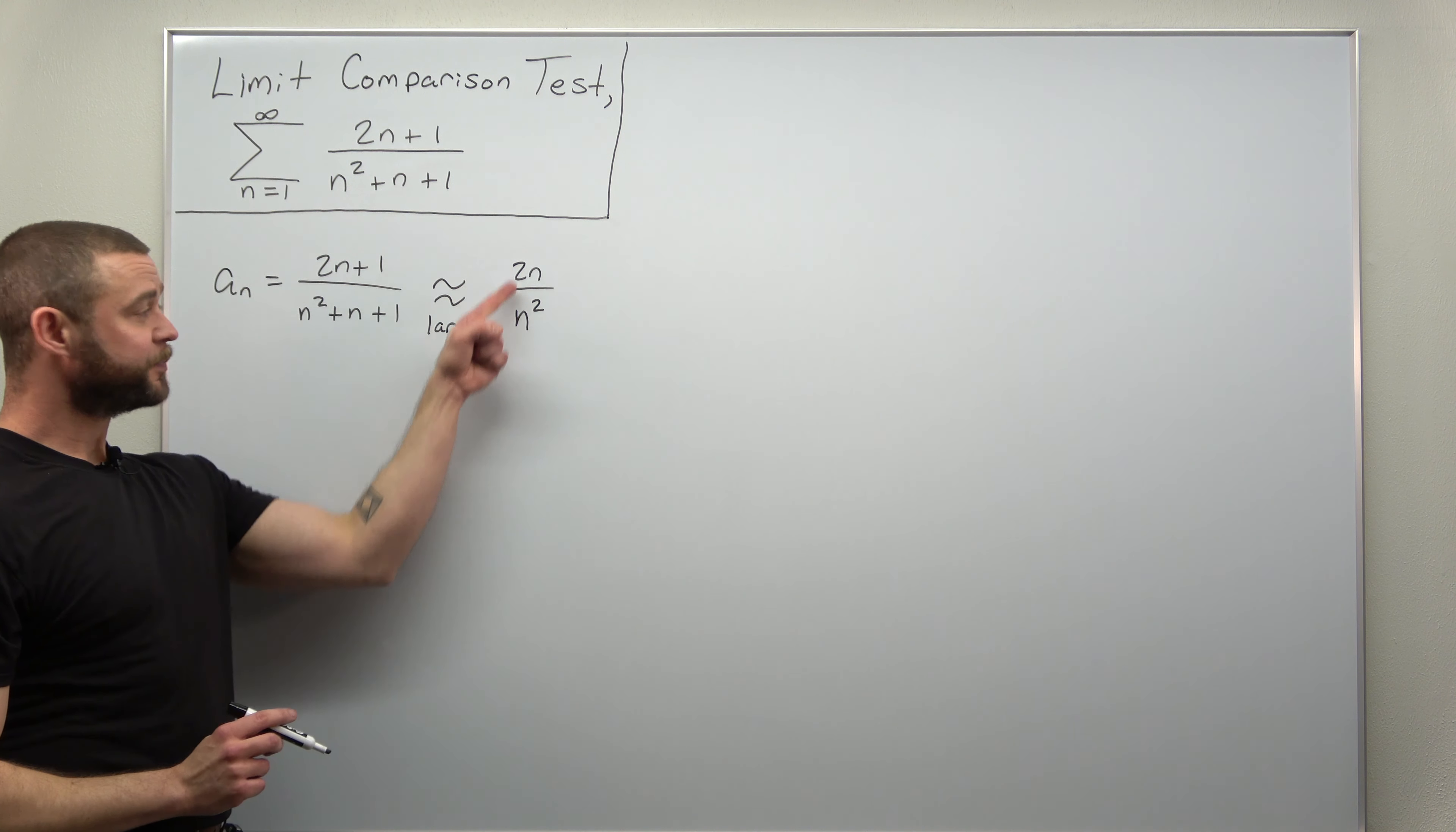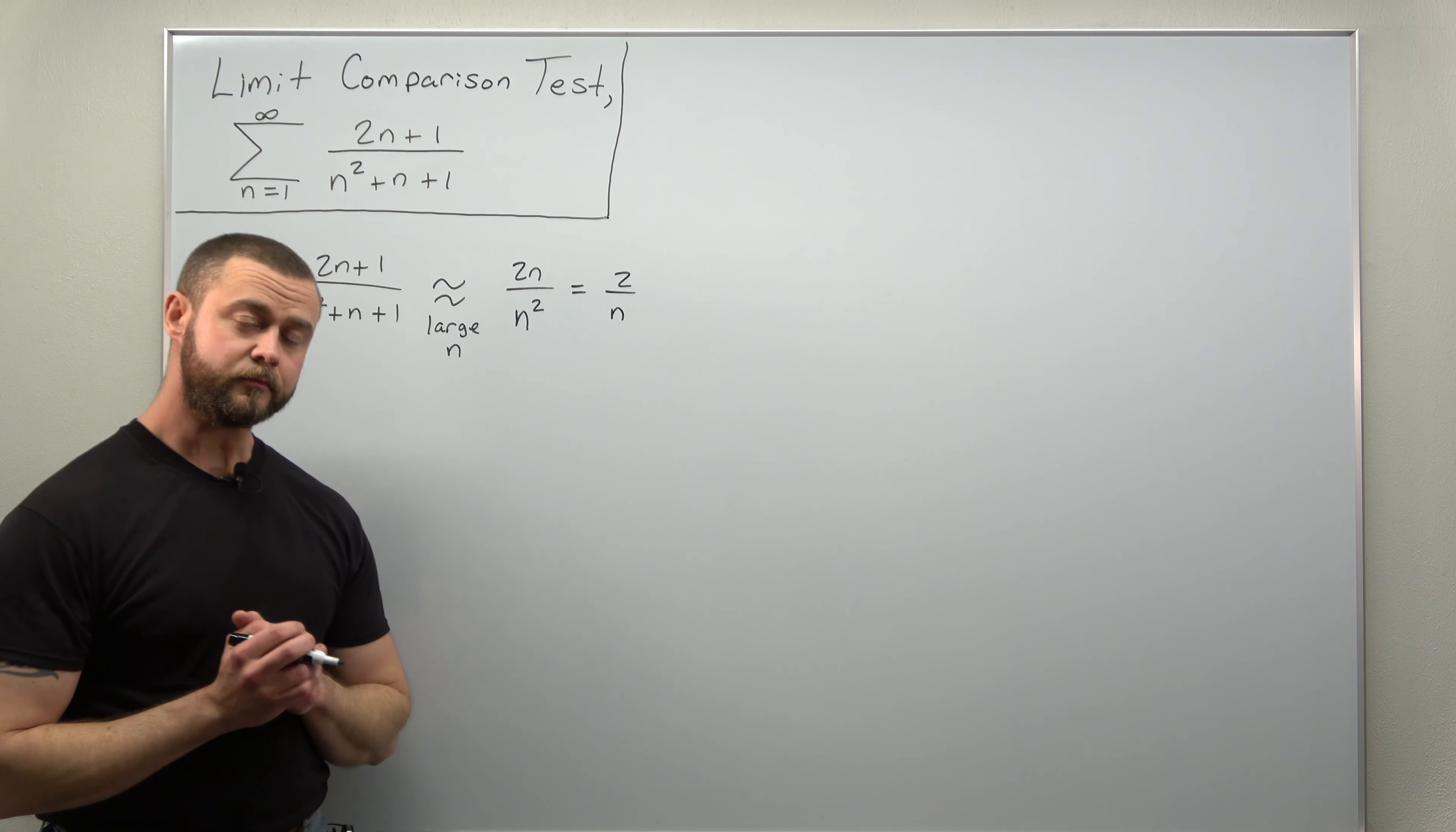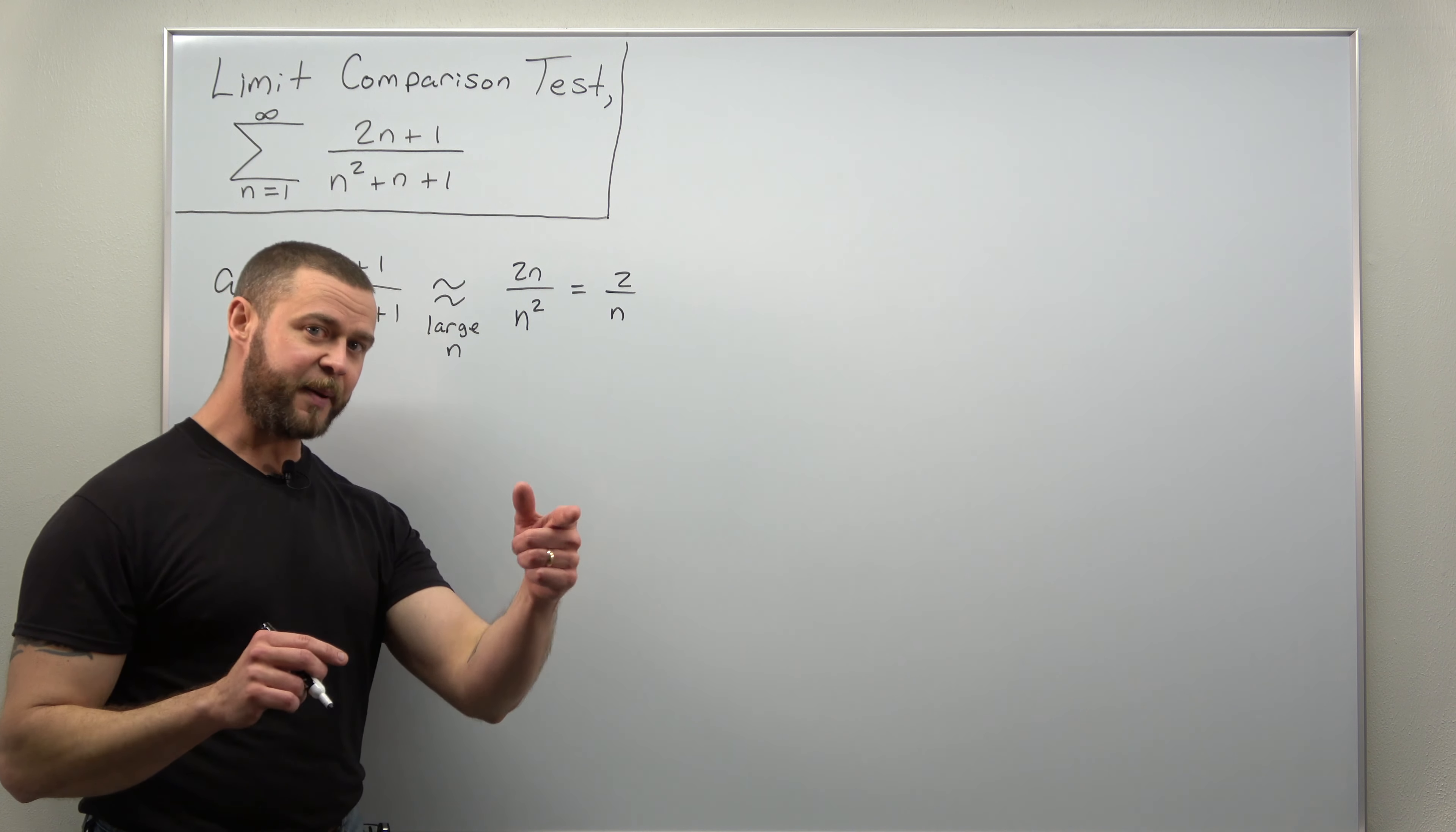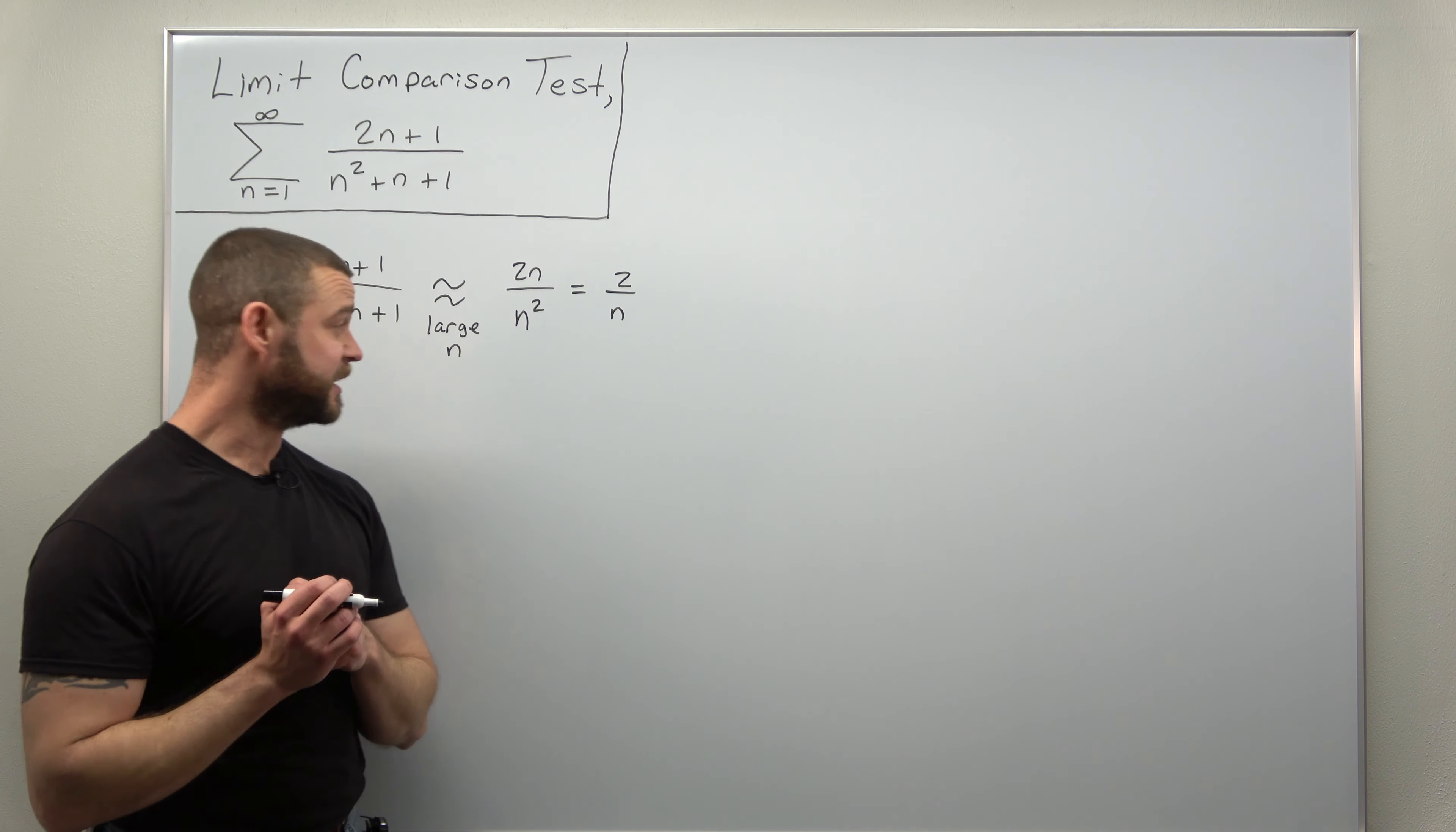We can simplify that. One power of n cancels out, and this comes out to be 2 over n. Now, that is going to be our comparison term, in other words, the term for the comparison infinite series.